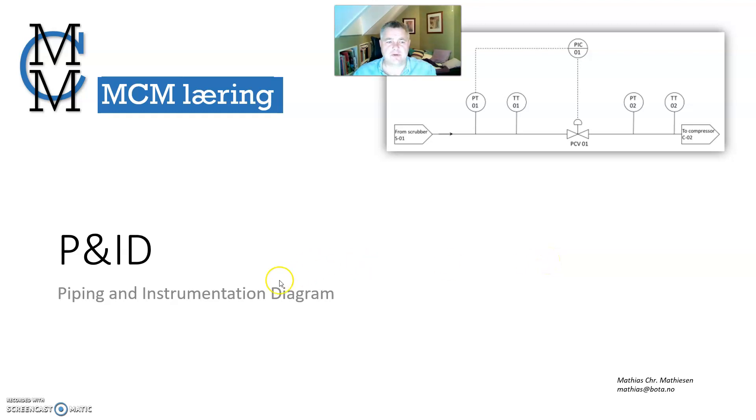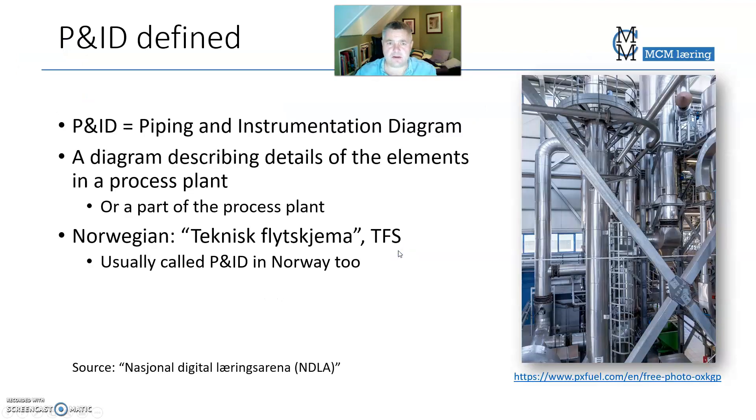P&ID, piping and instrumentation diagram. A P&ID is a diagram describing the details or the elements of the process plant, like this plant here. A diagram describing everything, every pipe, every valve, and every sensor in a plant like this.